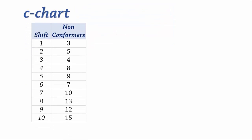Now let us construct a C-chart for this data. Here we have the number of non-conforming items collected per shift over 10 consecutive shifts. The total number of non-conformers is 86. So the average C-bar is 86 divided by 10, which gives 8.6.